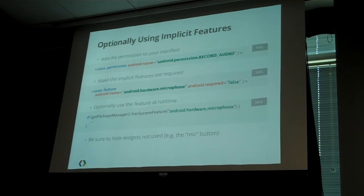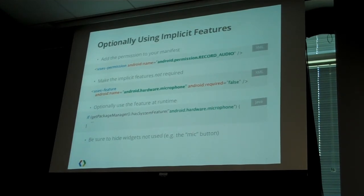This actually works not only with implicit features but also with other features that don't have permissions. For example, USB accessory mode — there is no permission for it, but you can check for that feature at runtime and use it only if the device supports it. Note that Google TV does not support USB accessory mode, only host mode.